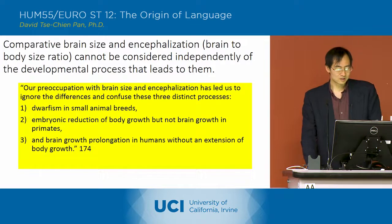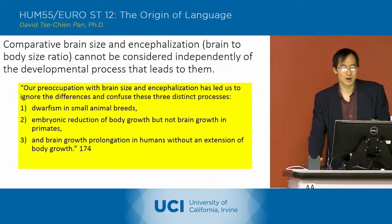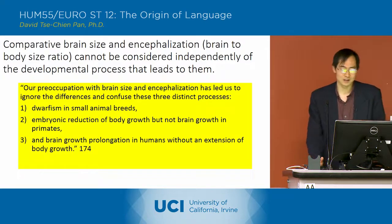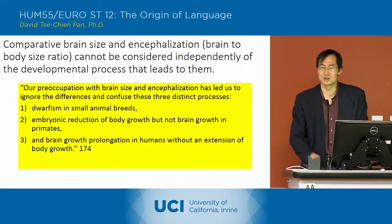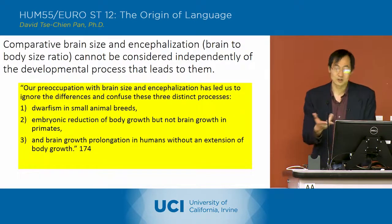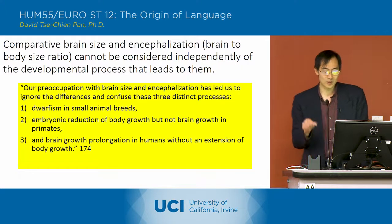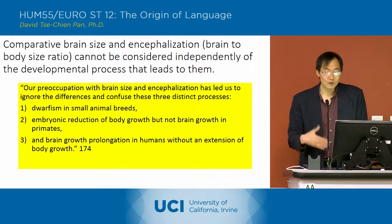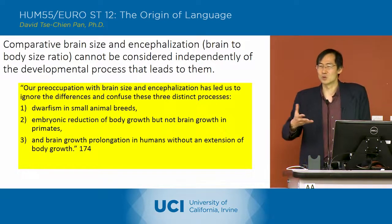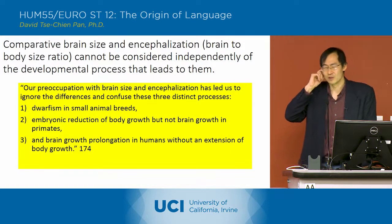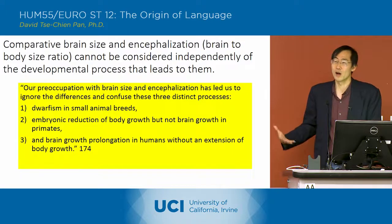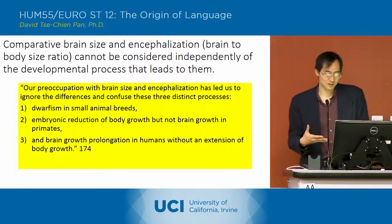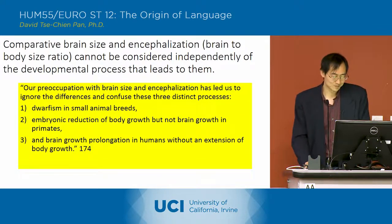To summarize, comparative brain size and encephalization must be understood in terms of the processes that produced them. There are three distinct cases: dwarfism in small breeds like Chihuahuas; embryonic reduction of body growth but not brain growth in primates; and brain growth prolongation in humans without an extension of body growth. In humans, it's as if we have the extra brain circuits that would normally belong to a much larger primate body.